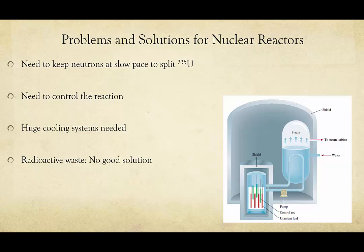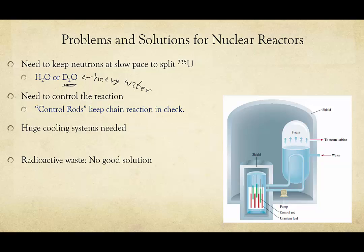That's the main difference between bombs and power — it's just the ability to control it. But there are significant engineering challenges. You have to keep the neutrons at a relatively slow pace to control the reaction and absorb some of them. We do this by ensuring lots of water or D2O — heavy water — is present. We also need to make sure the reaction is consistently cooled, otherwise we would start melting the casings. We use control rods to keep the chain reaction in check, and also huge cooling systems using water and steam to turn turbines, which also generates power.